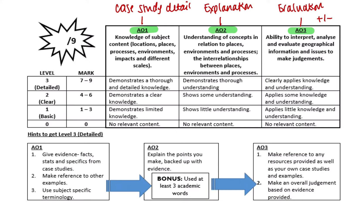A good rule of thumb is to try and hit each one of these assessment objectives within a paragraph. On a nine marker you're really writing two good paragraphs and a short conclusion. If we look at the marking scale, putting in facts and figures, developing them, and saying what's good and bad will start working you up toward the top of that scale.